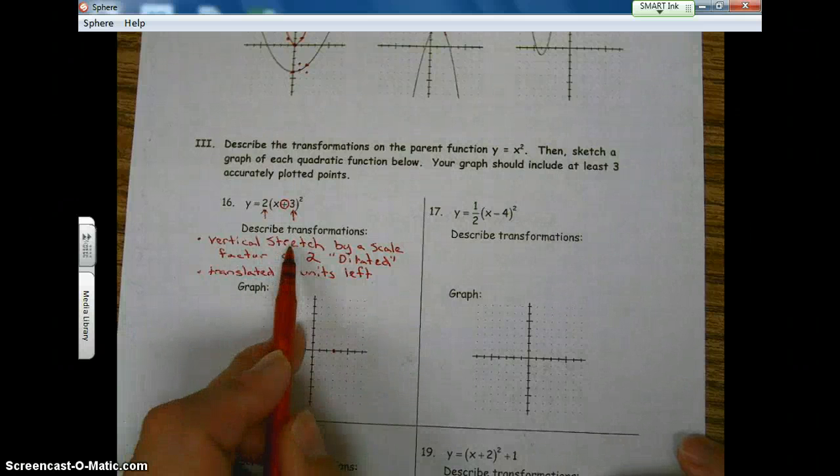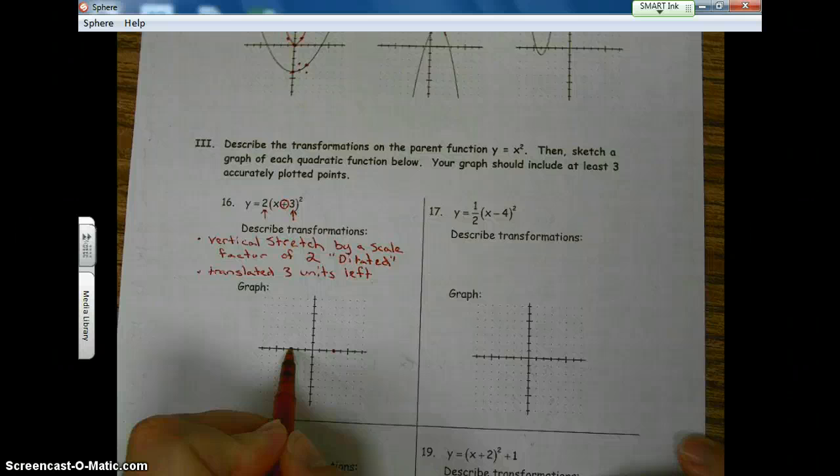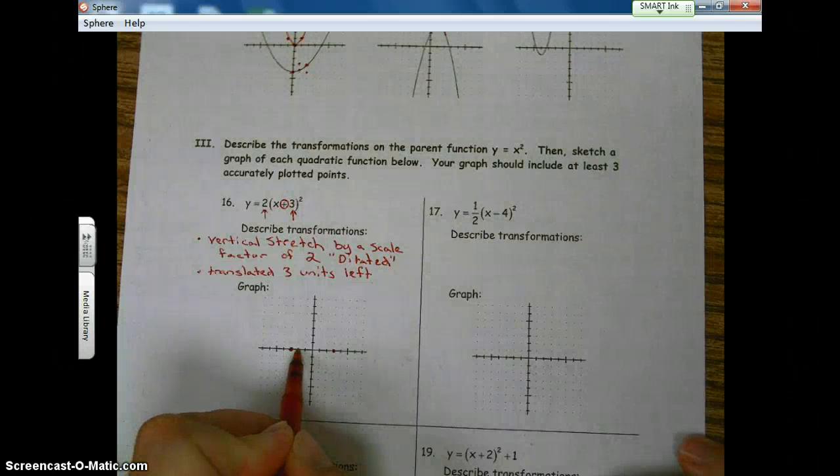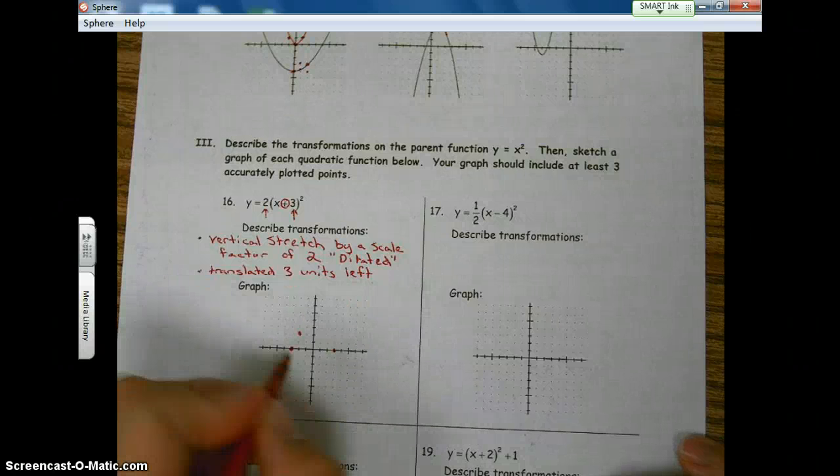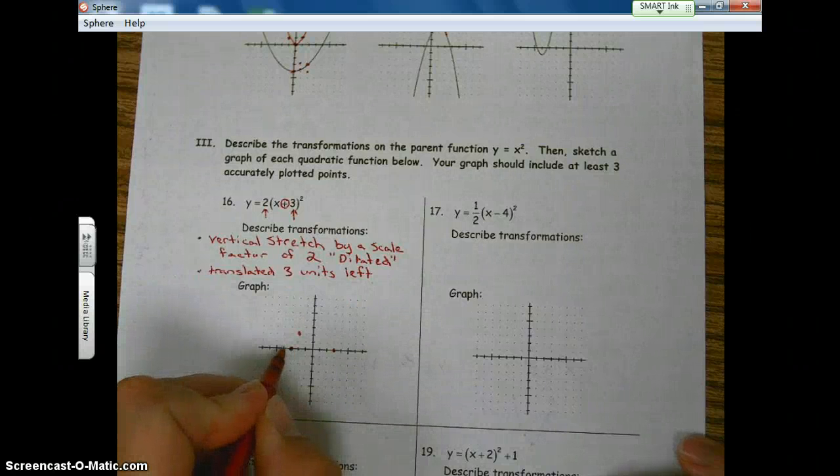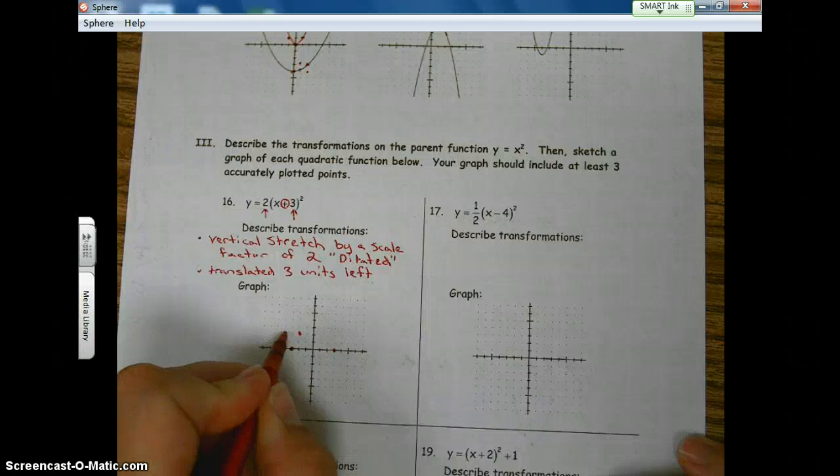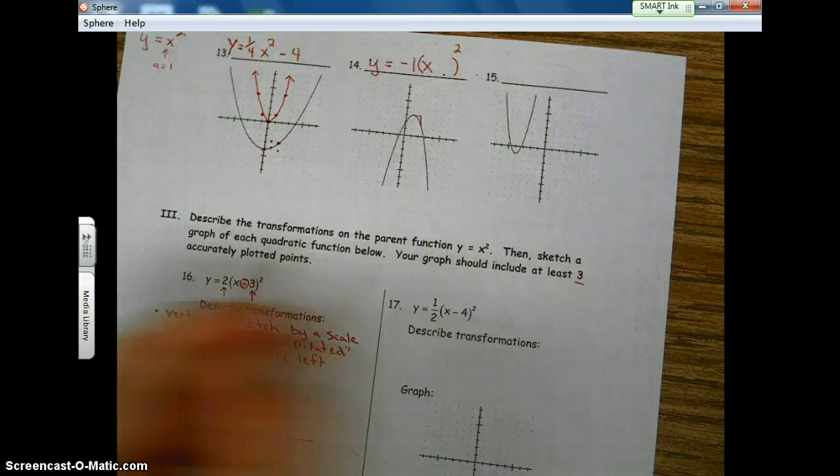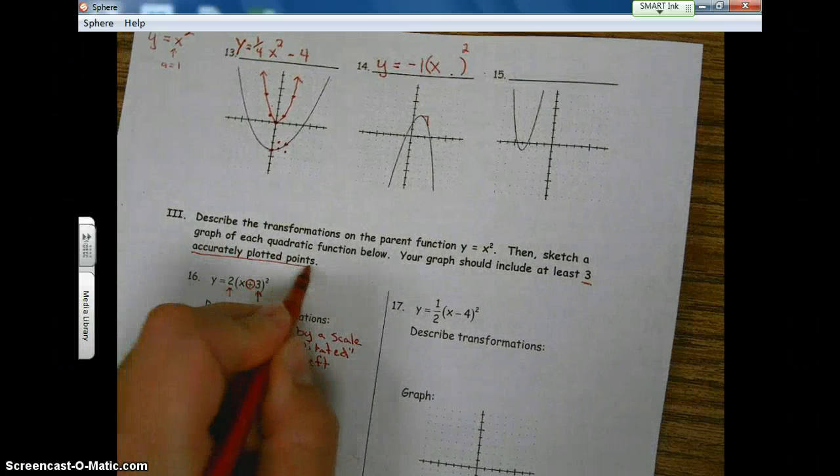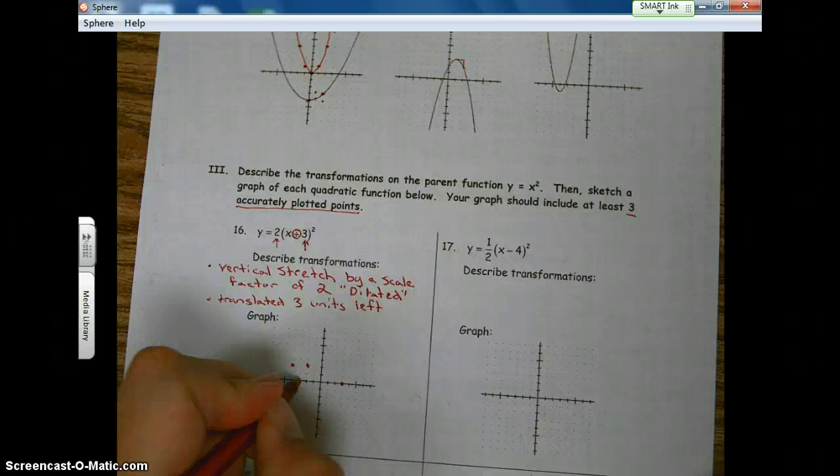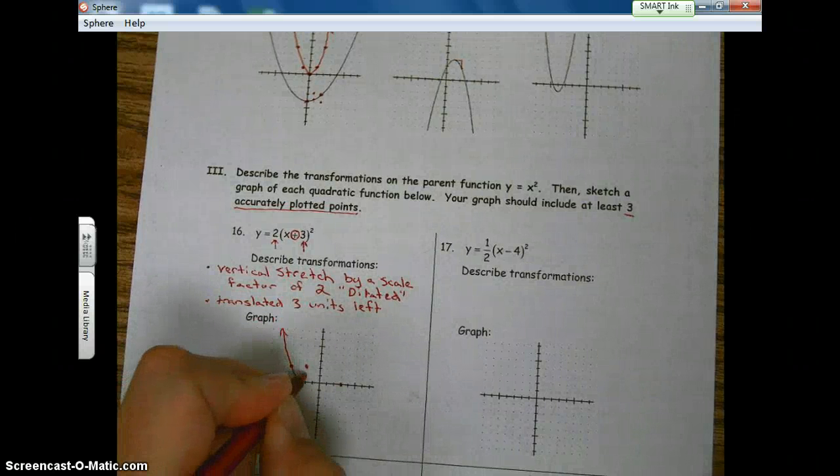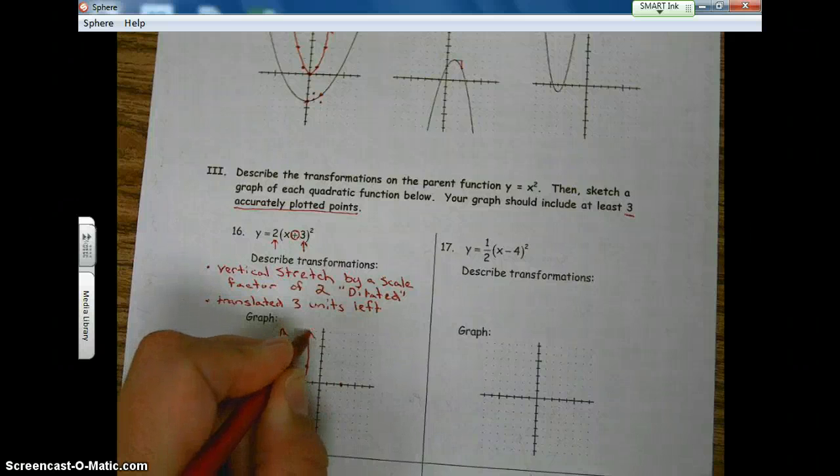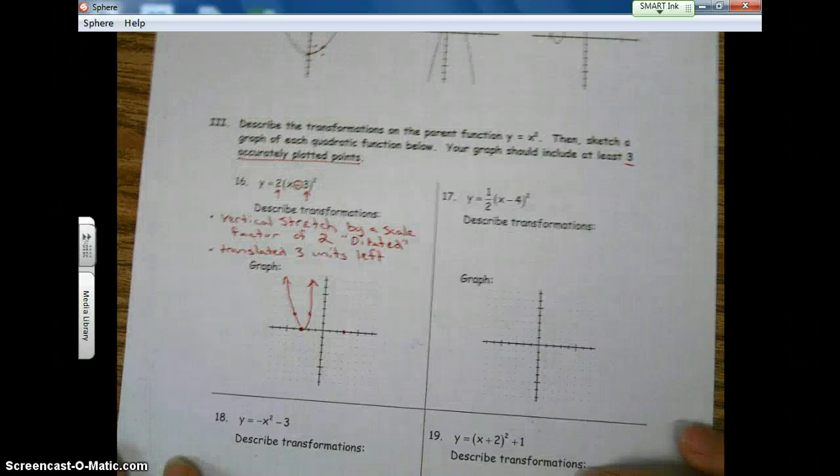Vertical stretch of two, which means that when we go over one unit, we go up two. And it's symmetrical. So we go over one unit, we go up two. That's all the information we have. We have three accurately plotted points. Now we're going to sketch our graph from there. Now, since we have a vertical stretch, it should appear a little narrower than the parent.